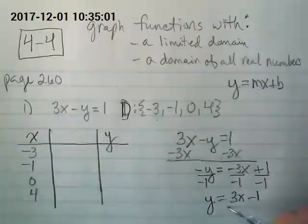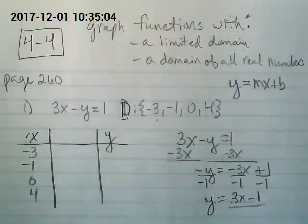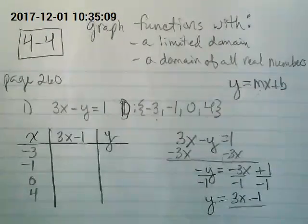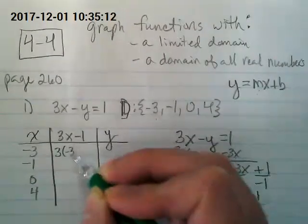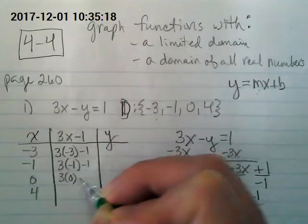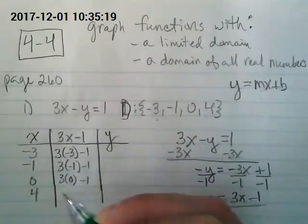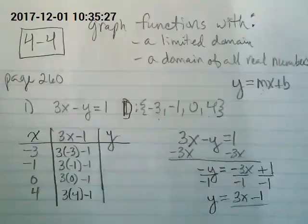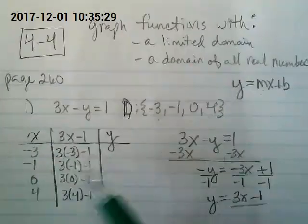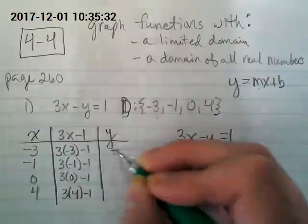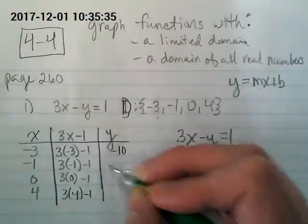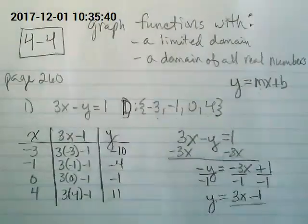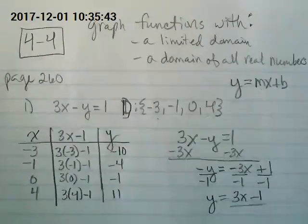Okay. What's our rule now? 3x minus 1 is our rule. And we're going to plug in our x values so that we can get our y values. This is going to be negative 9 minus 1 will be negative 10. Negative 3 minus 1 will be negative 4. Negative 1 and then 11.